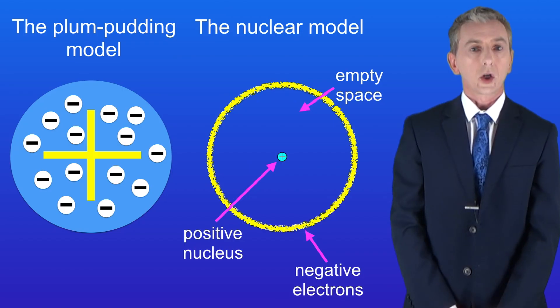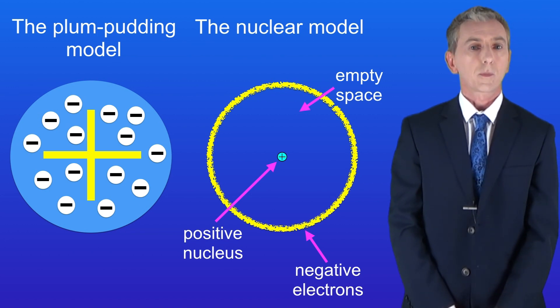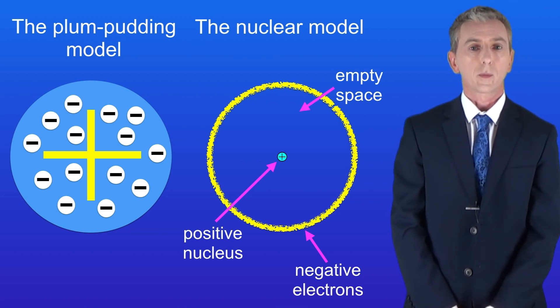In the last video we saw that an early model of atomic structure was called the plum pudding model. However, the results of the alpha scattering experiment led to this being replaced by the nuclear model of atomic structure.